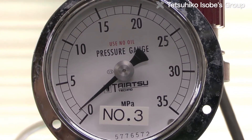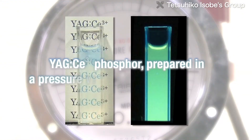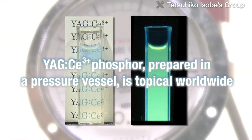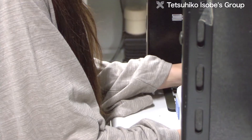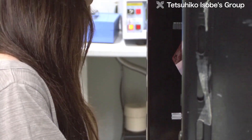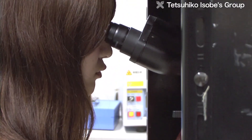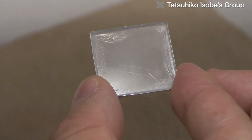In particular, YAGCE phosphors produced by the pressure cooker method have attracted attention worldwide. It is also possible to make transparent phosphors which don't scatter light, by keeping the particle size below 50 nanometers, which is one-tenth the wavelength of visible light.